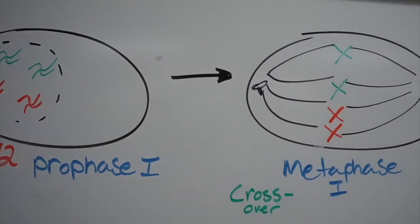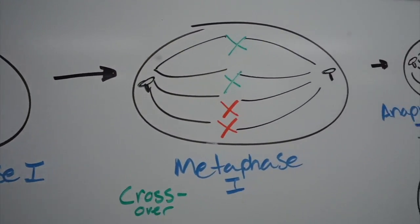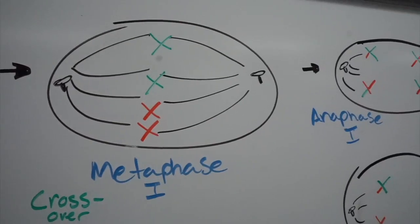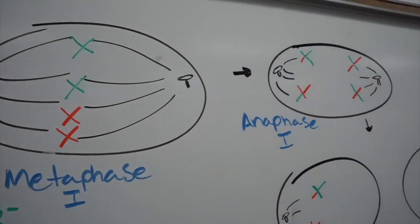You're going to go through metaphase, in which you're going to have crossing over occur, in which we are going to randomize the genes on our chromosomes.